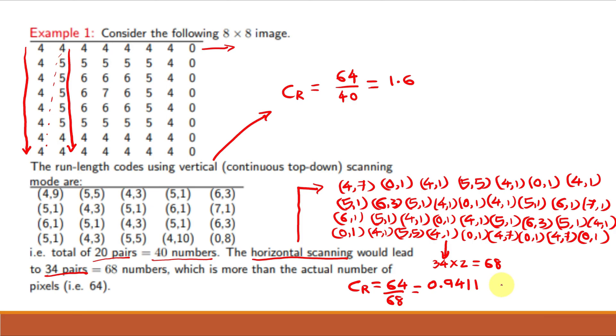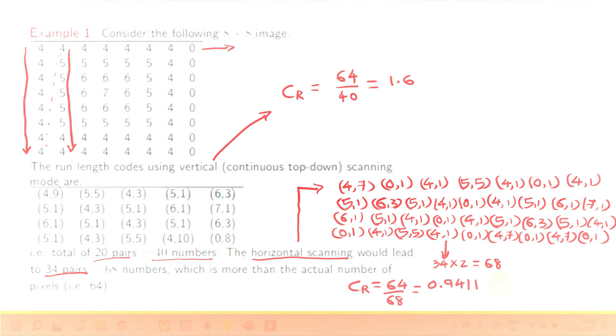So this is the disadvantage of run length coding. We should not use it when the number of repeating symbols are very less and we should also choose scanning method, either vertical or horizontal scanning so as to achieve positive compression.